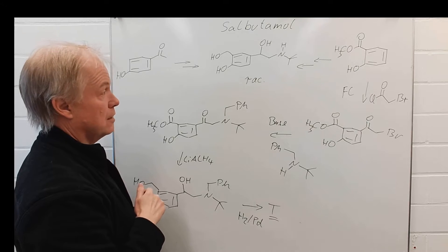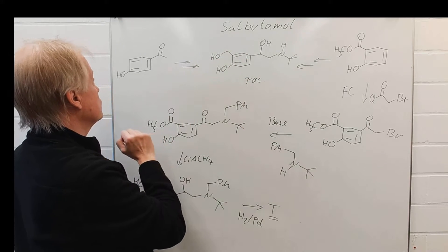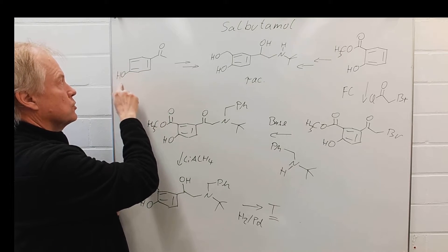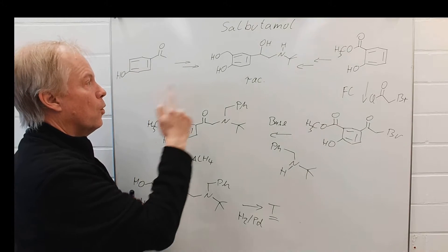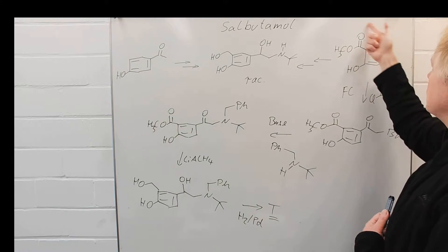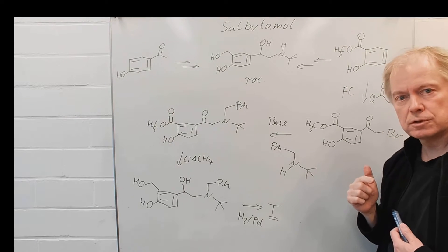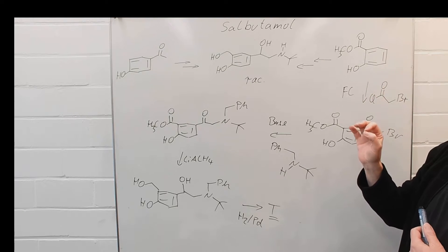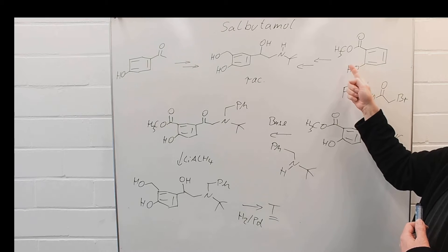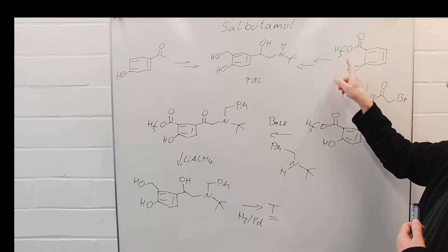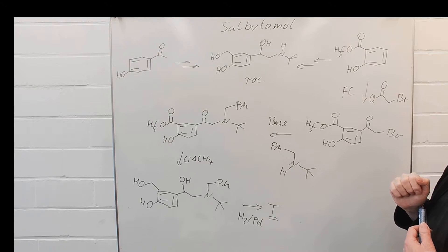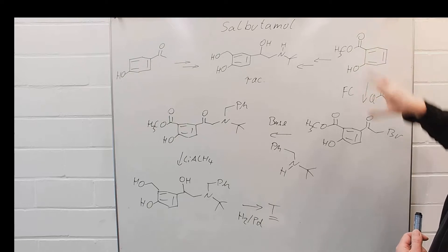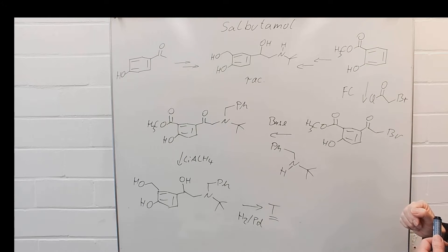You can start the synthesis of this molecule either from 4-hydroxyacetophenone or from this molecule — everyone should be able to identify this as a derivative of salicylic acid. It is the salicylic acid methyl ester. In the first part of the video, we will have a look at the synthesis from this starting component.